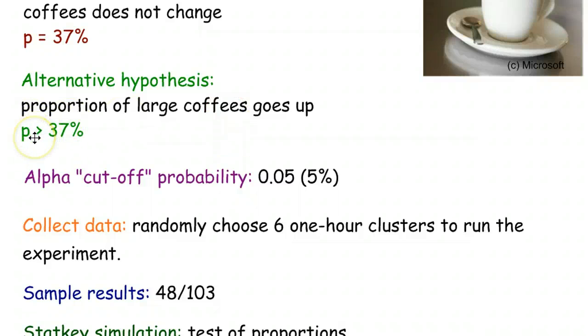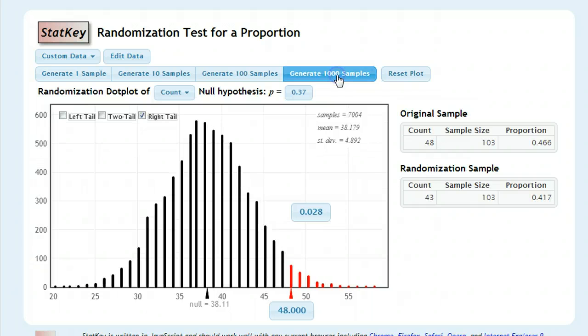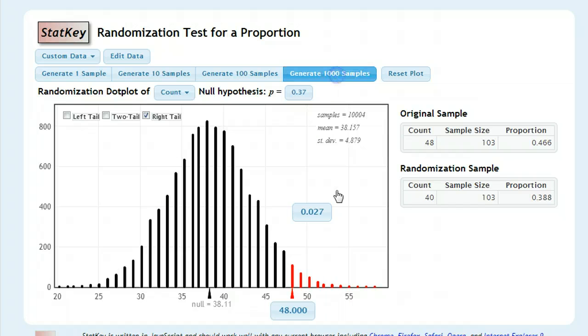It's greater than 37%. And I see here this number, 0.030. And I can generate more samples to see how well that number holds up. And it looks like it's a pretty robust number. So maybe it's 0.027, something like that. But it's approximately 0.03, or 3% chance, that I'm going to get a 48 or larger if the null hypothesis is true.